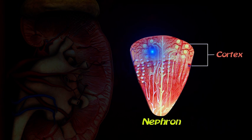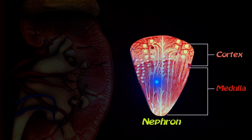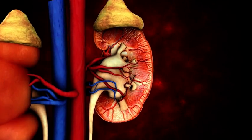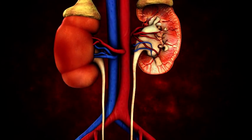It begins in the cortex, loops down into the medulla, back into the cortex, and then goes down through the medulla to the pelvis, where it joins with the ureters.